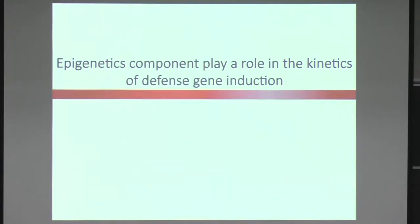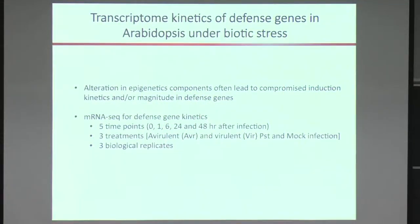We began to think that epigenetic components are important in regulating defense gene induction kinetics, so we decided to look at other epigenetic components. I'll be introducing the DCL components involved in small RNA biogenesis — in Arabidopsis there are only four DCLs. We decided to analyze the kinetics of defense gene induction, and since we couldn't find a suitable published RNA-seq dataset, we performed our own mRNA-seq.